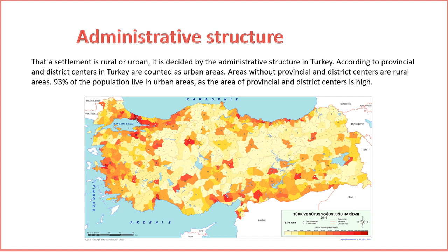Administrative Structures of Settlements in Turkey. Today our exploration takes us into the intricate administrative structures that govern diverse settlements across Turkey. Understanding the administrative framework is crucial for unraveling the complexities and dynamics of governance within these communities. 1. Urban Settlements. Metropolitan Municipalities. In larger urban centers, particularly cities with significant populations, metropolitan municipalities play a central role. These municipalities have broader administrative powers, overseeing a wide range of services including transportation, infrastructure, education, and healthcare.